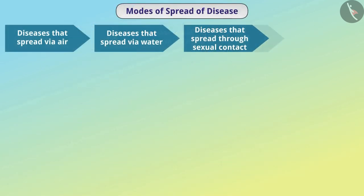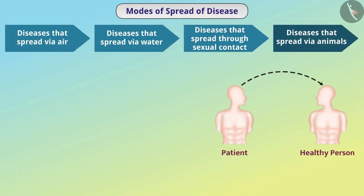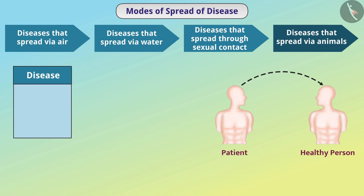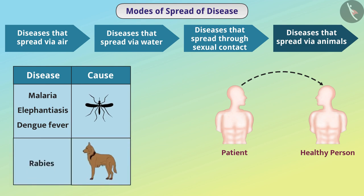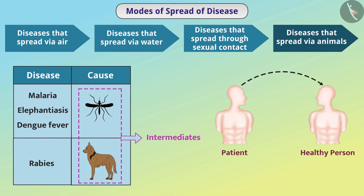Some diseases are spread through other animals. For example, malaria, elephantiasis, and dengue fever spread through mosquito bites, and rabies spreads through dog bites. These animals act as intermediates, and that is why they are called vectors. In this way, different diseases spread through different modes.